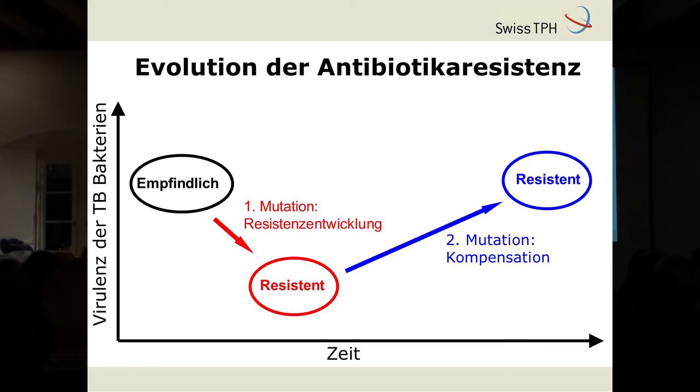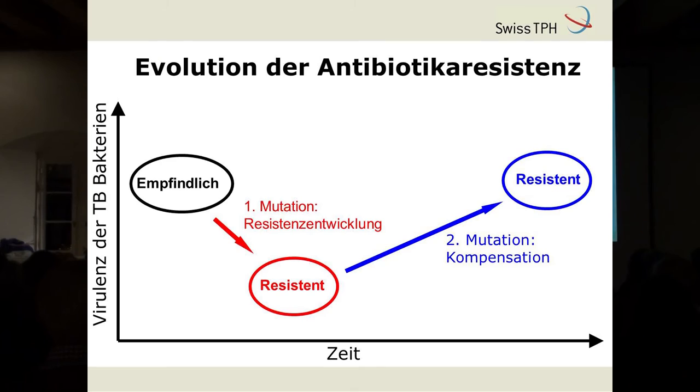Es gibt da ein ganz interessantes Phänomen, wenn man sich das näher anschaut, wie die Bakterien diese Resistenzen entwickeln. Und zwar oft, aber nicht immer, führt das eben auch zu einer Reduktion der sogenannten Virulenz oder der Aggressivität dieser Bakterien. Also diese Bakterien werden resistent zu den Antibiotika und verlieren wenigstens einen Teil dieser Aggressivität. Das ist eigentlich eine gute Nachricht. Die schlechte Nachricht ist, dass die Geschichte nicht so einfach ist: es kommen zusätzliche Mutationen, weitere Veränderungen in diesen Bakterien, sogenannte Kompensationsmutationen, die diese Virulenz oder Aggressivität eben wieder nach oben treiben.